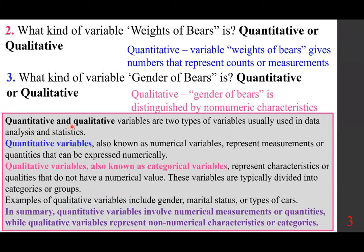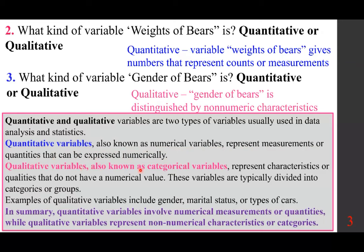Quantitative and qualitative variables are two types of variables used in data analysis and statistics. Quantitative variables, also known as numerical variables, represent measurements or quantities that can be expressed numerically. Qualitative variables, also known as categorical variables, represent characteristics or qualities that do not have a numerical value and are typically divided into categories or groups. Examples include gender, marital status, or types of cars.